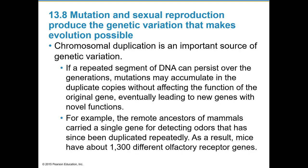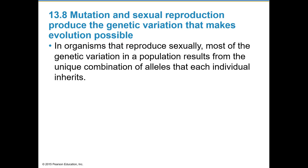On rare occasions, a mutated allele may actually improve an individual's adaptation and enhance reproductive success — more likely when the environment is changing such that previously disadvantageous mutations become favorable. Chromosomal duplication is an important source of genetic variation: if a repeated DNA segment persists over generations, mutations can accumulate in duplicate copies without affecting the original gene's function, eventually leading to new genes with new functions. For example, a remote mammalian ancestor had a single gene for detecting odors; repeated duplication has given mice about 1,300 different olfactory receptor genes.